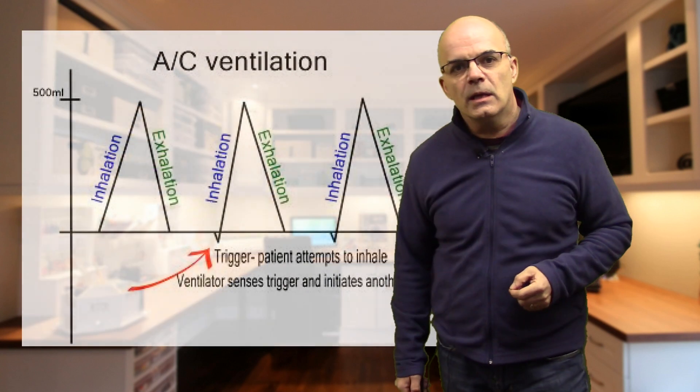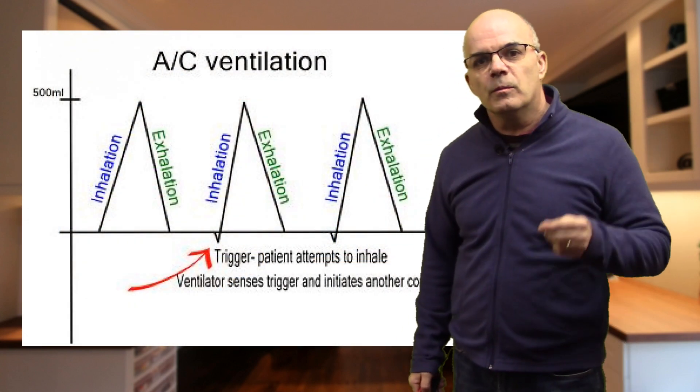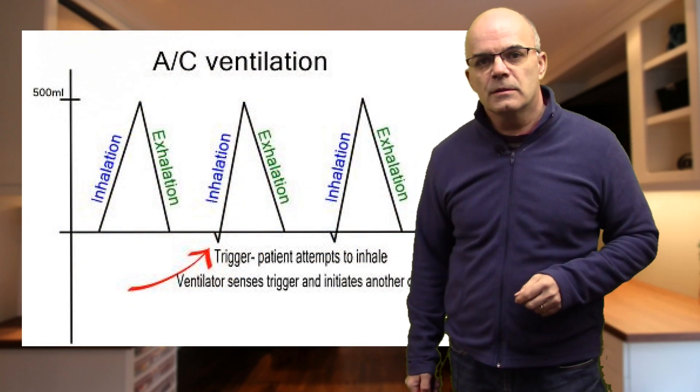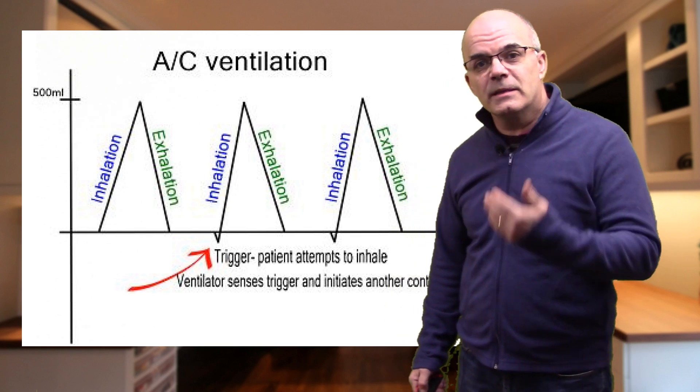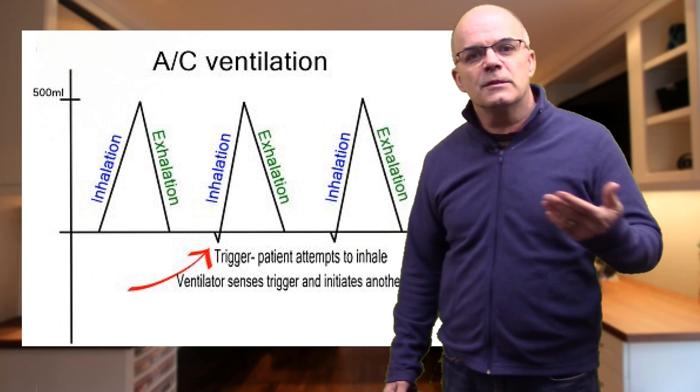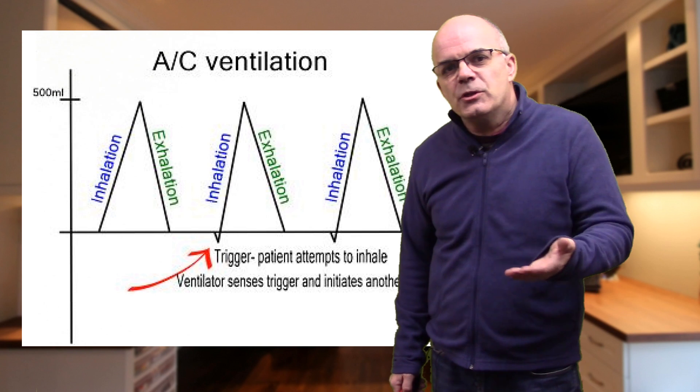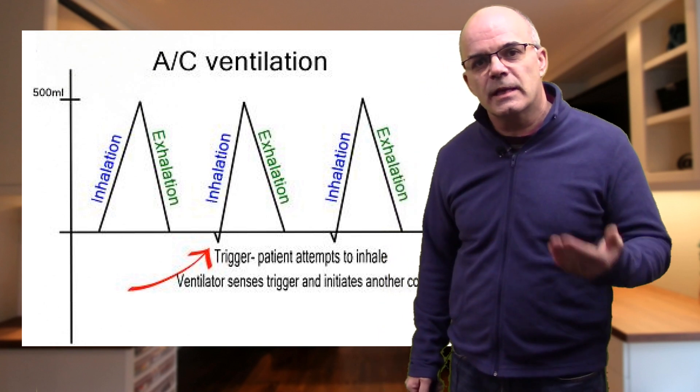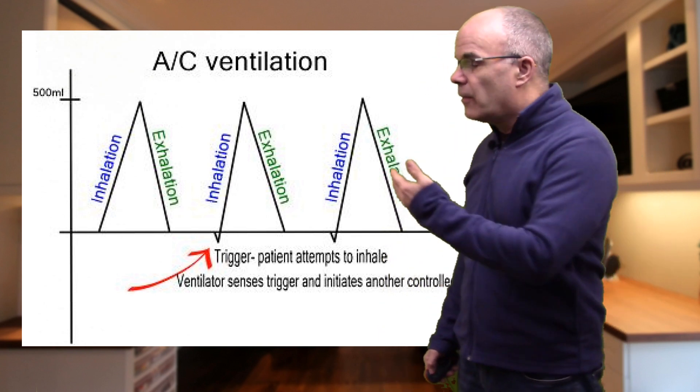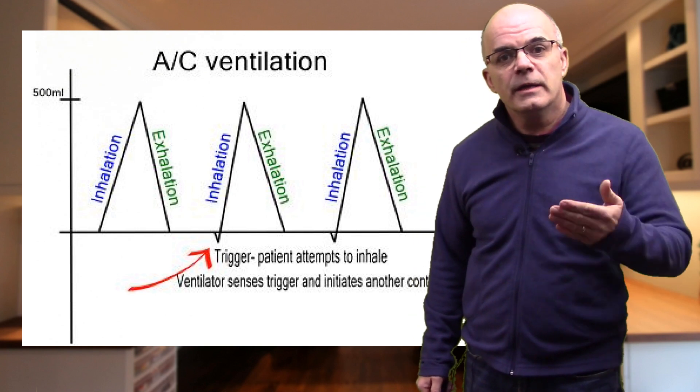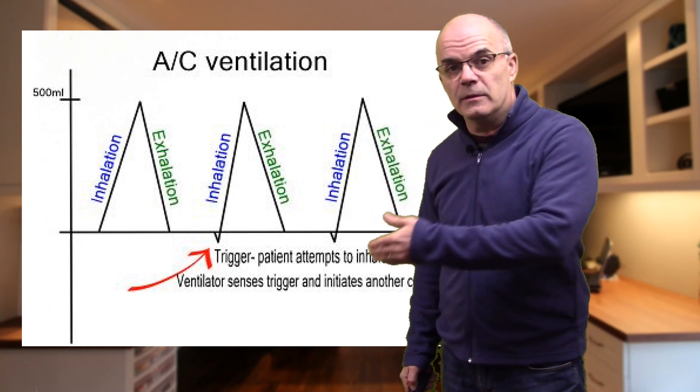If we look at the example here, we can see that the volume has been set to 500 mils. The first breath delivered is a mandatory one. Maybe the set rate is 15 breaths per minute and the patient has not initiated a breath within the set time, so the machine then delivers the set breath to the 500 mils set.